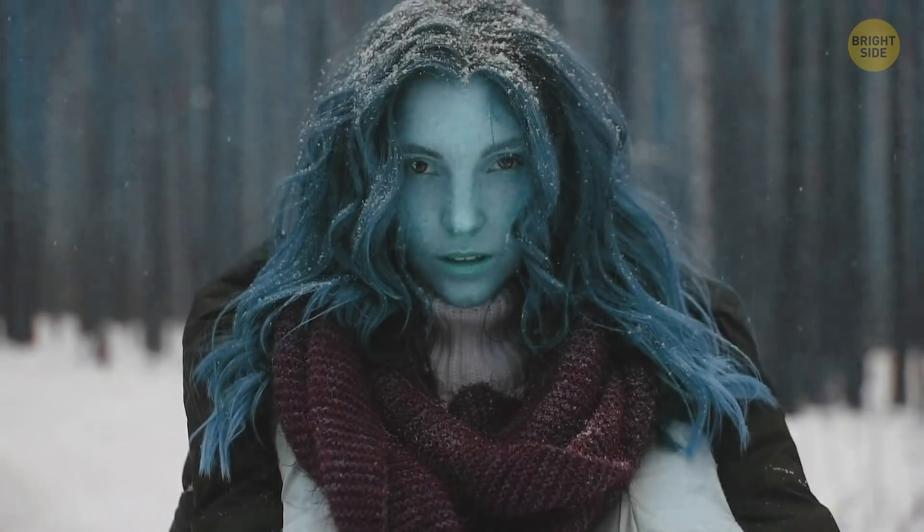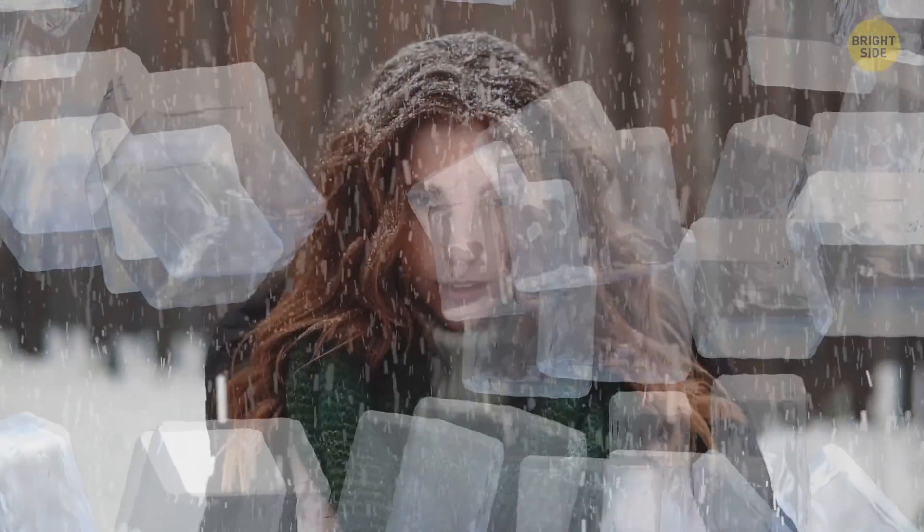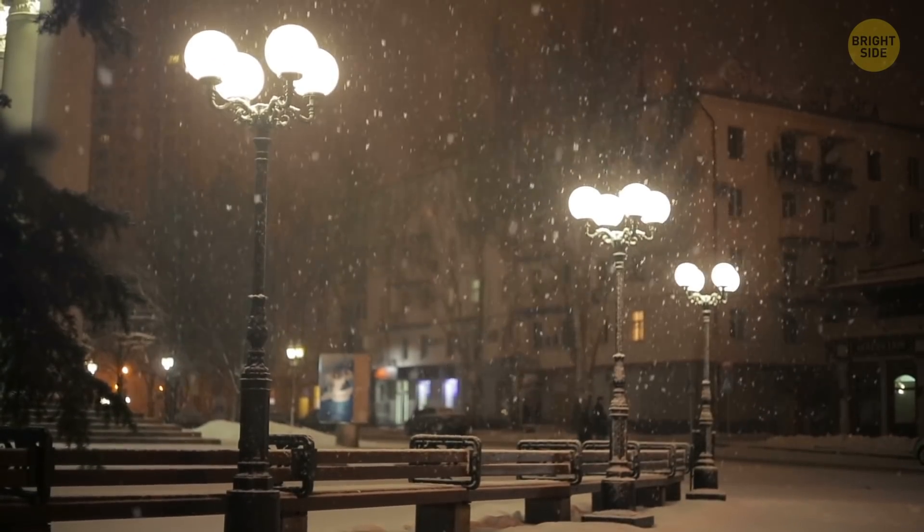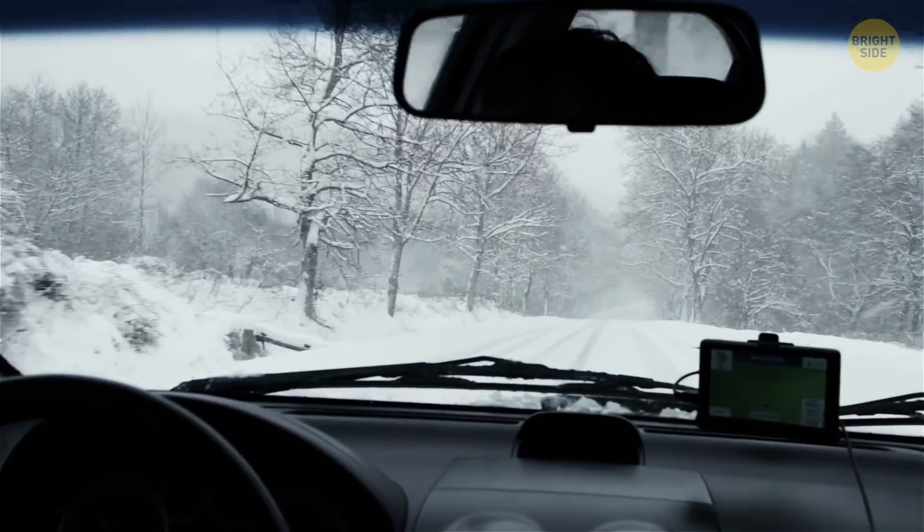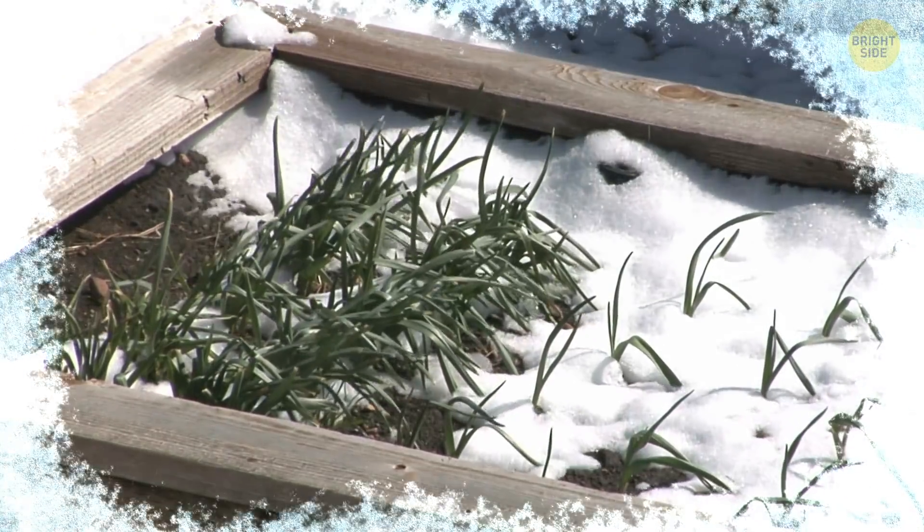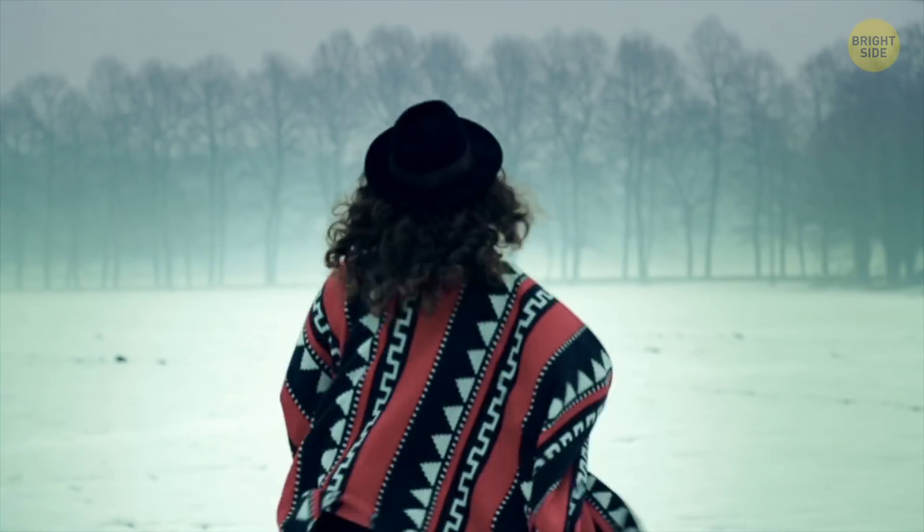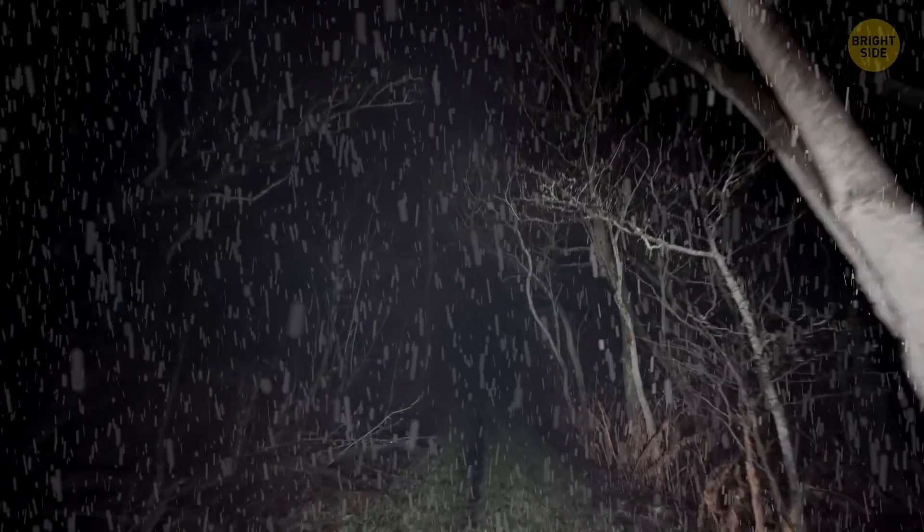But even though the inhabitants of Earth hoped that the process would somehow reverse, the situation was getting worse. Every next day was darker than the previous one. Dimmer sun meant that plants didn't have enough light to convert it into energy. They started to wither, and animals that fed on them couldn't find food and disappeared from the surface of the planet. Panic and fear were enveloping Earth.